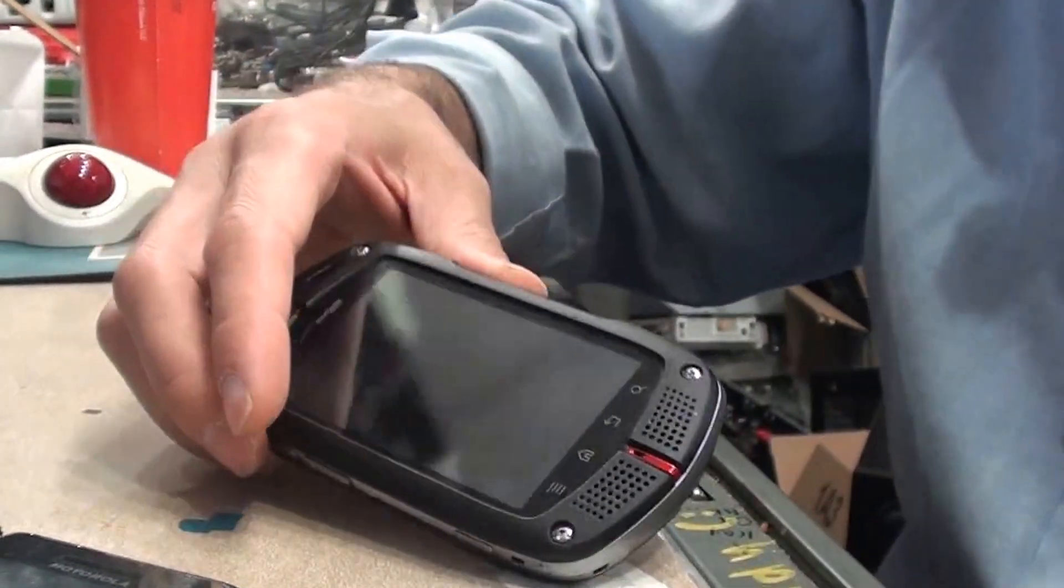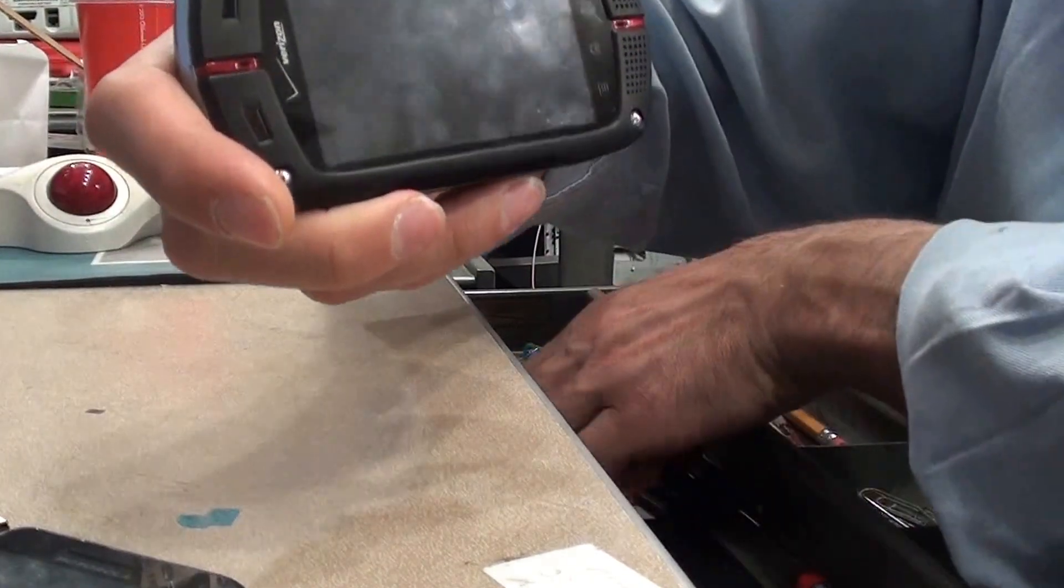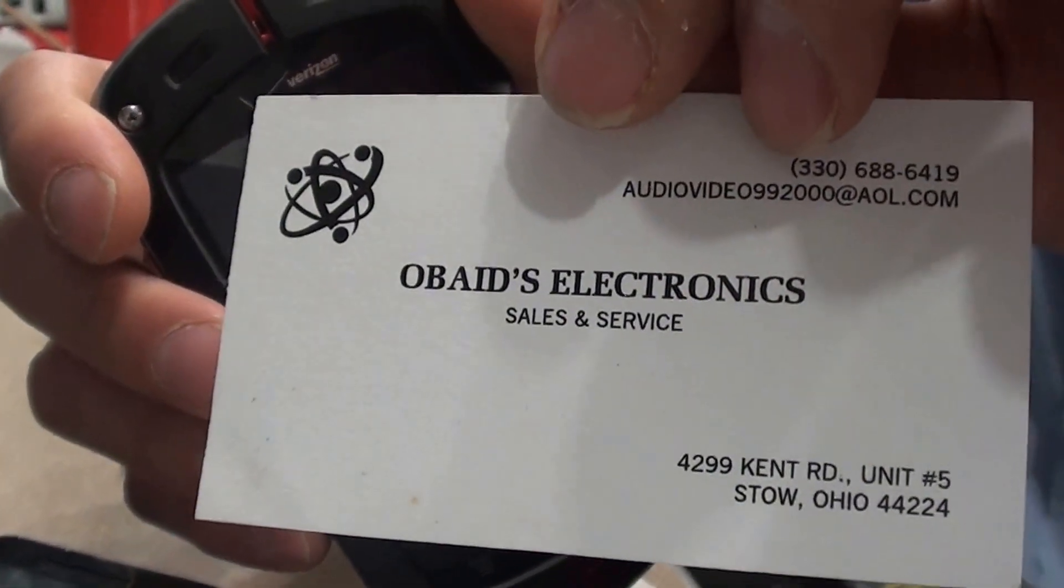Hello YouTube. I want to do a quick reset on this Commando G Zone. It's the Verizon Rugged Phone. Here's our business card if you guys have any questions.